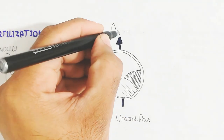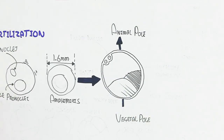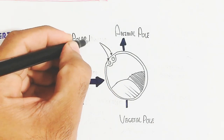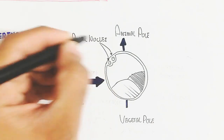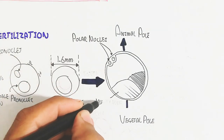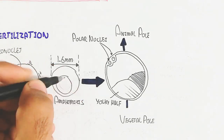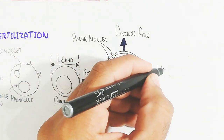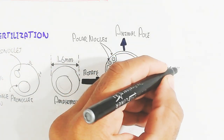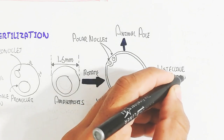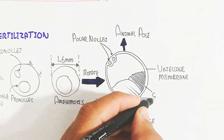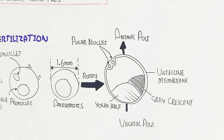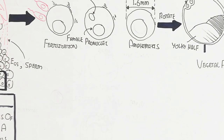The polar nuclei are present in the egg. After fertilization, the animal pole and vegetal pole are formed, with a yolk half and gray crescent area and the vitelline membrane. Now let's begin to understand the cleavage and morula formation.